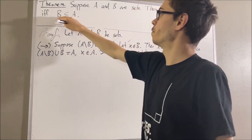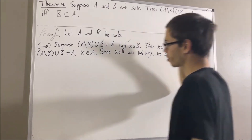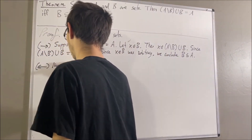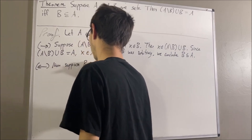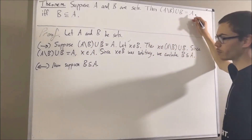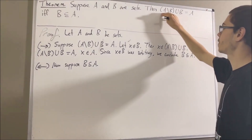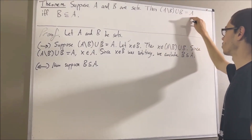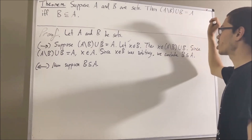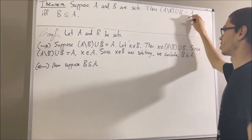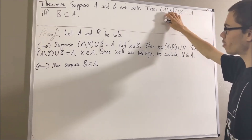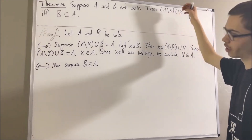Now let's prove the other direction: if B is a subset of A, then the union of A set minus B and B equals A. To do so, suppose B is a subset of A. Our goal is to deduce that these two sets are equal. We can show this by proving each set is contained in the other — everything in the union is in A, and everything in A is in the union. Let's start by showing everything in the union is also in A. Give me an arbitrary element of this set — I'll call it X.